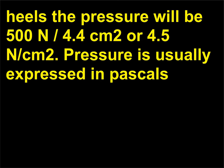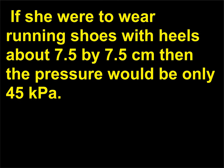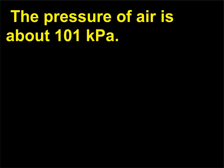Pressure is usually expressed in pascals, Pa, or N slash m squared. In this case the pressure would be 1.1 million pascals or 1,100 kPa. If she were to wear running shoes with heels about 7.5 by 7.5 cm then the pressure would be only 45 kPa. The pressure of air is about 101 kPa.